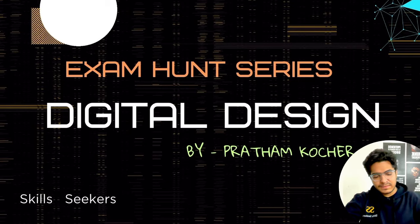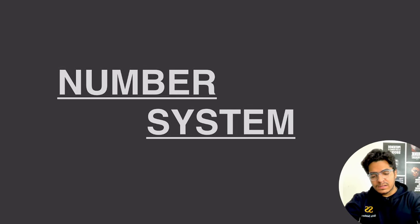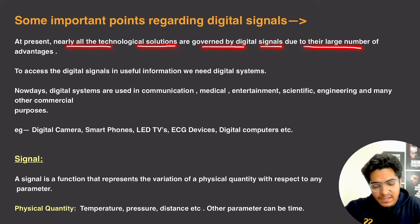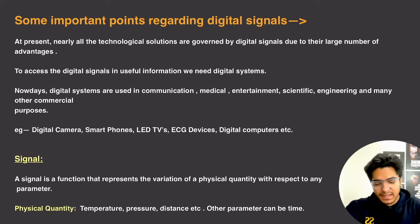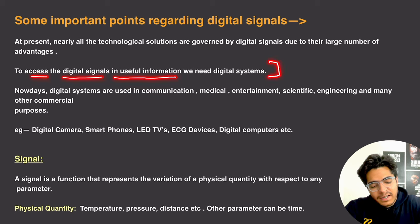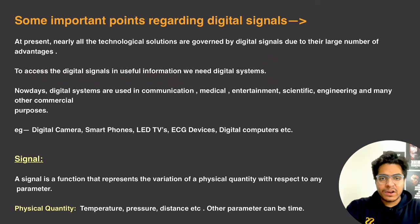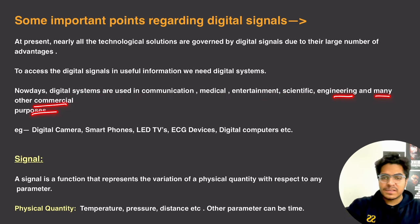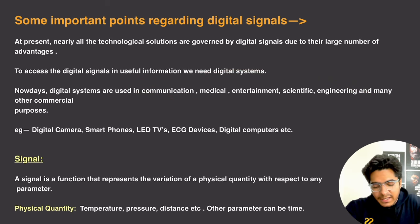What we cover today is number systems. But first, let's see some important points regarding digital signals. At present, nearly all technological solutions are governed by digital signals due to their large number of advantages. To access digital signals and useful information, we need digital systems. Digital systems are used in communication, medical, entertainment, scientific, engineering, and many other commercial purposes — for example, digital cameras, smartphones, and LED TVs.